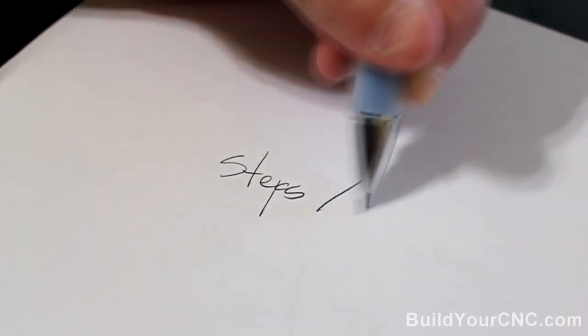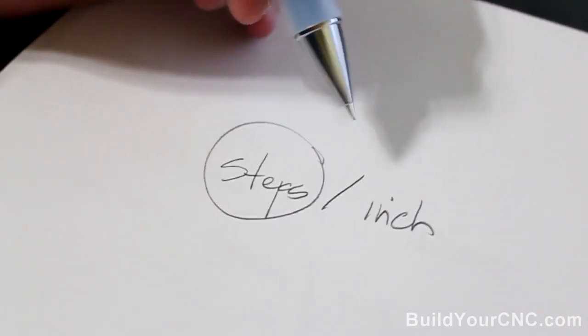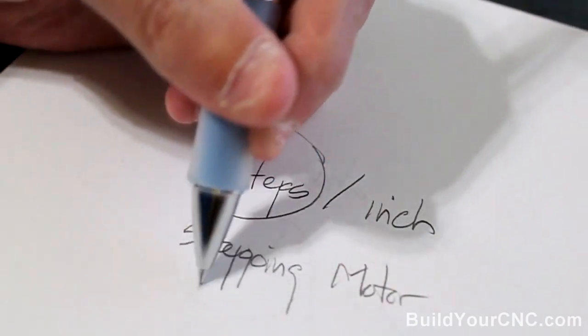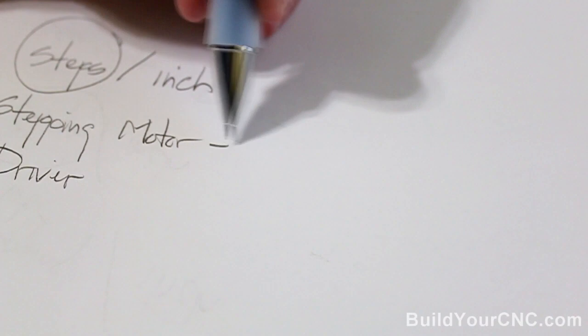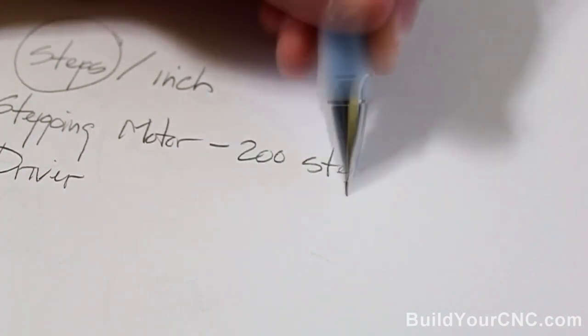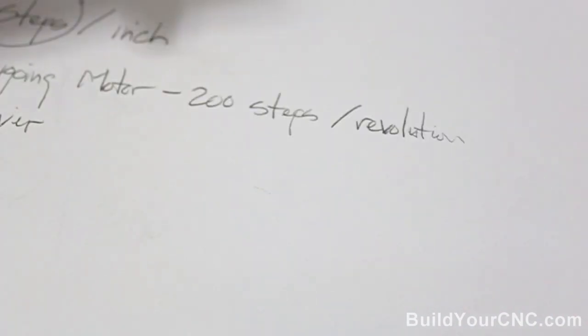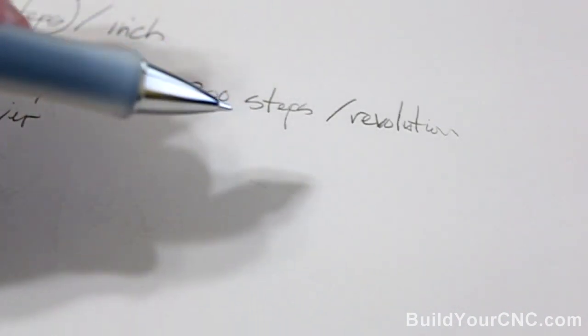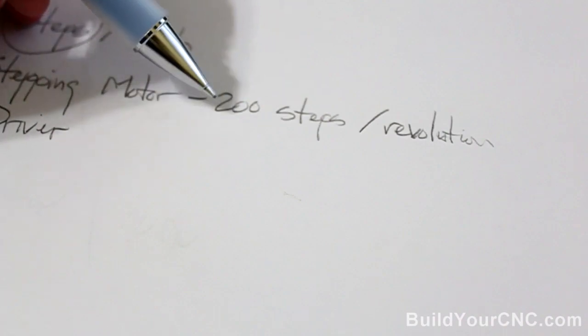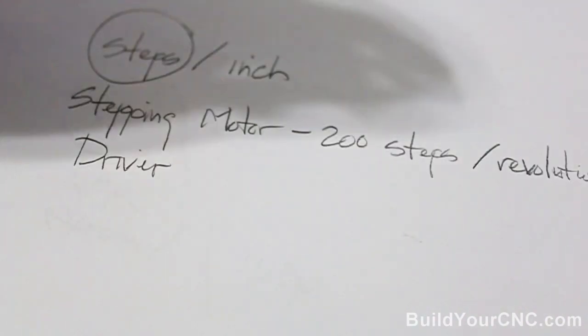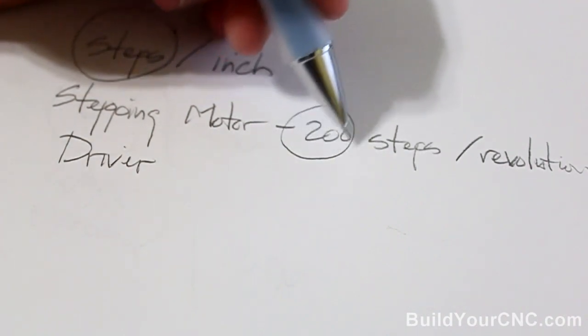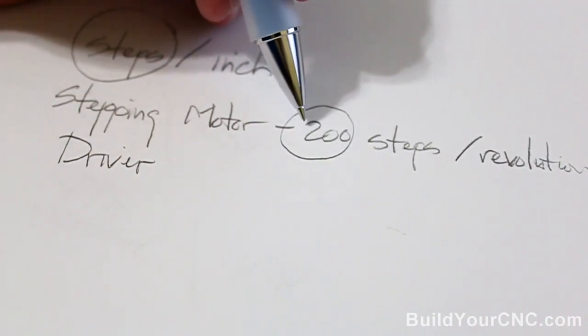So the first thing we need to do is figure out the steps per inch. These steps are derived from the stepping motor and the driver. Typically the stepping motor produces 200 steps per revolution. The driver is also capable of increasing this number of steps. You can multiply this number of steps by generally multiples of two.